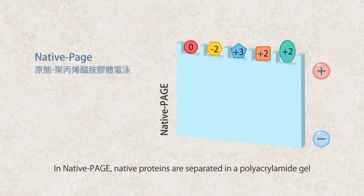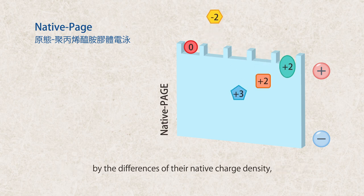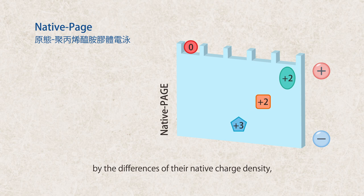In native PAGE, native proteins are separated in a polyacrylamide gel by the differences of their native charge density, conformation, and size under the electric field.